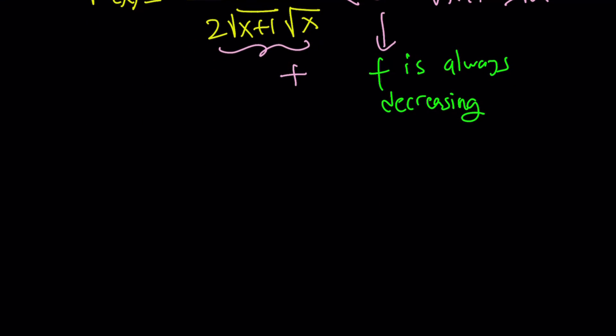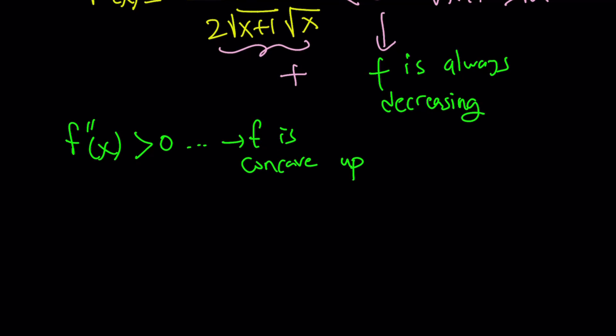Here's something important. If you differentiate f prime one more time you get the second derivative, and you'll notice that the second derivative is positive — you can check this yourself. This means that f is concave up. The second derivative gives you concavity, so our function is concave up. But since it's decreasing, it's going to curve like a decreasing concave-up shape.